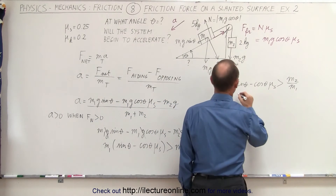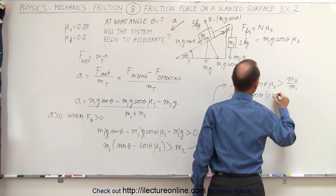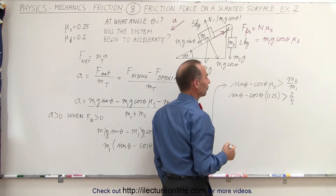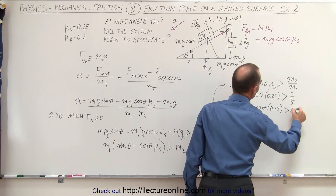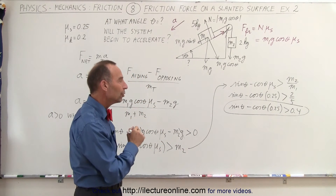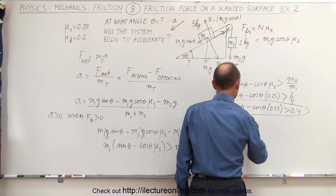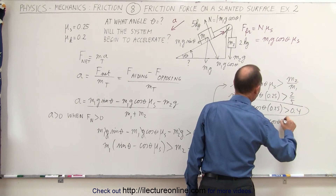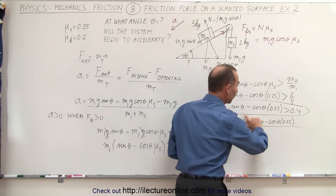Plugging in the numbers: sine of theta minus cosine of theta times mu sub s, where mu sub s is 0.25, must be greater than the ratio M2 to M1, which is 2 to 5, equal to 0.4. So we're looking for sine theta minus cosine theta times 0.25 to be greater than 0.4. We cannot algebraically solve for theta, so we'll set up a table of values to zero in on the answer.